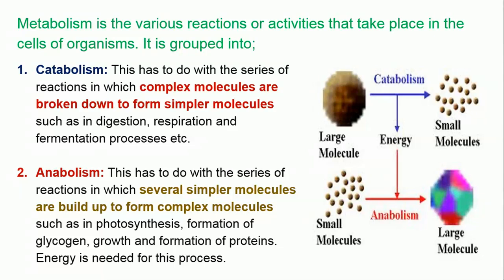This is the food manufactured in plants during photosynthesis. Take note that during anabolic reactions, energy is needed for the process. In summary: catabolism — large molecules are broken down into several small molecules. Anabolism — small molecules build up or join together to form large molecules.